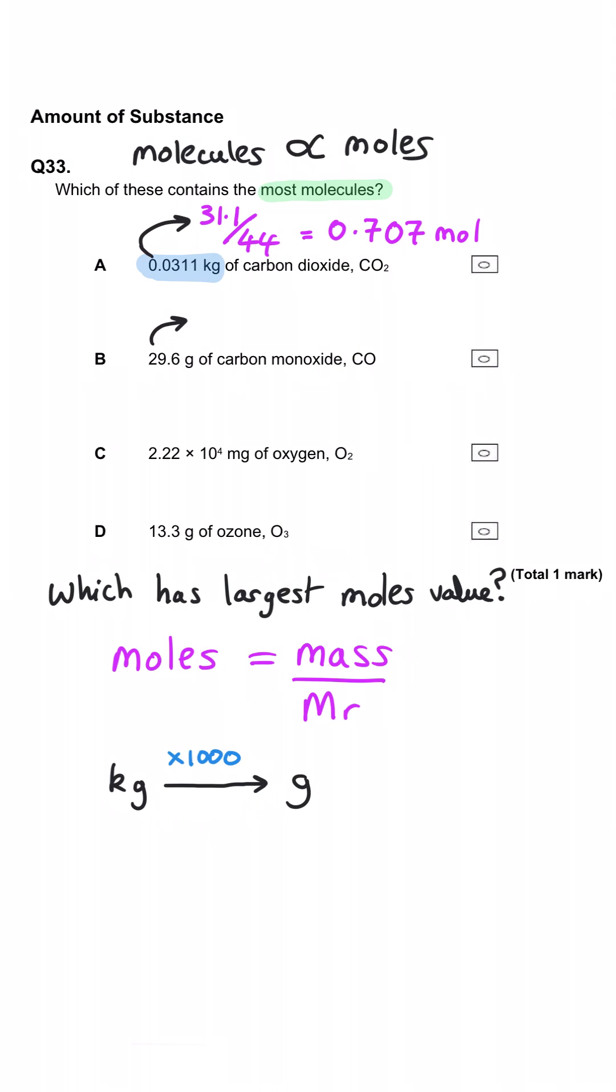For B, the MR of carbon monoxide is 28, and so we have to do 29.6 divided by 28, which gets us 1.06 moles of carbon monoxide. So we now know that A is wrong because B has got a bigger number of moles.